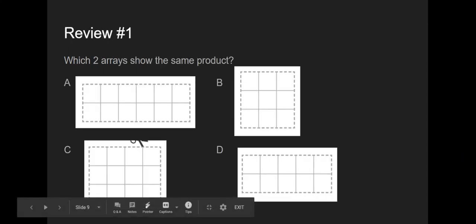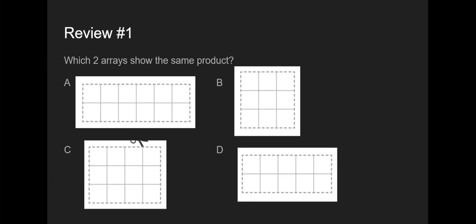Today we're reviewing what we've learned about arrays. Here's a sample problem that you might see on a test or quiz. We have four arrays, A, B, C, and D, in this problem. The question we need to answer is: which two arrays show the same product? If I'm looking at array A, I see that there are two rows and there's six squares in each row. So that is modeling 2 times 6.